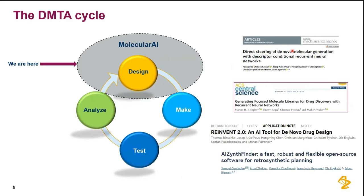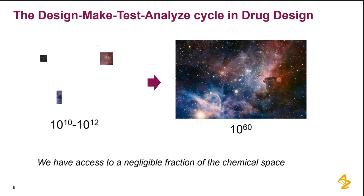Our department works on the design stage, so I'll focus mostly on idea generation. We try to publish our work and source code. What makes it difficult to generate new ideas: if you look at chemical space — the collection of all compounds that could potentially be made — this is enormous, estimated to be on the order of 10 to the power of 60 compounds.